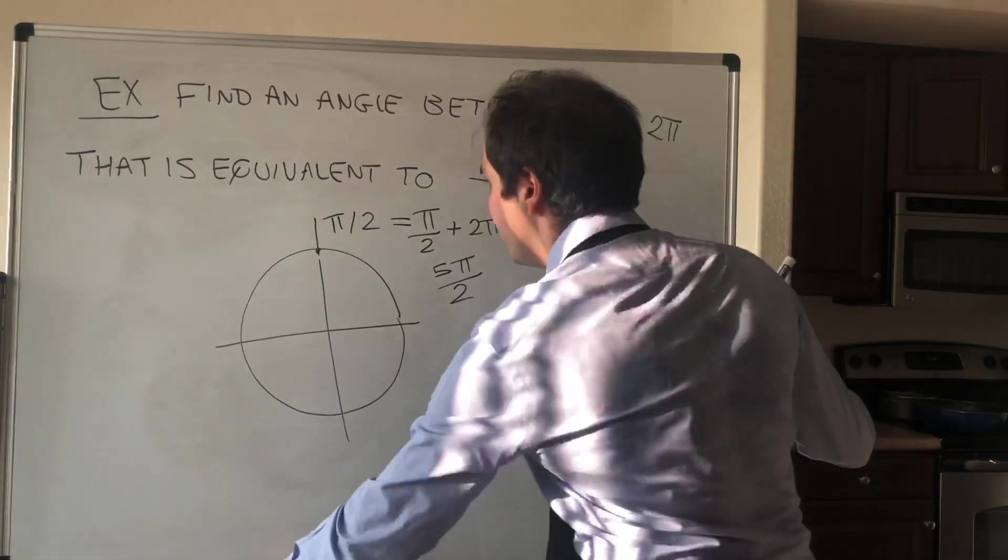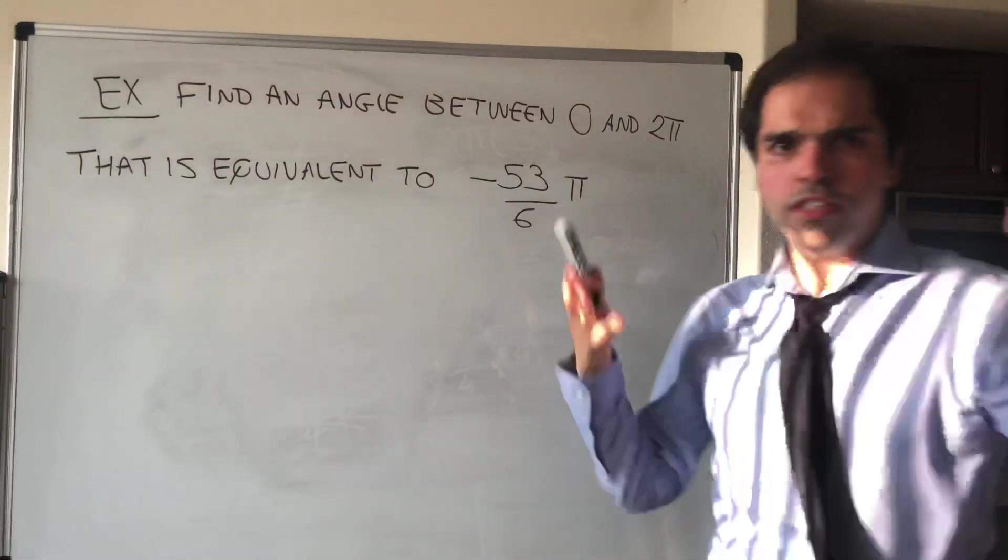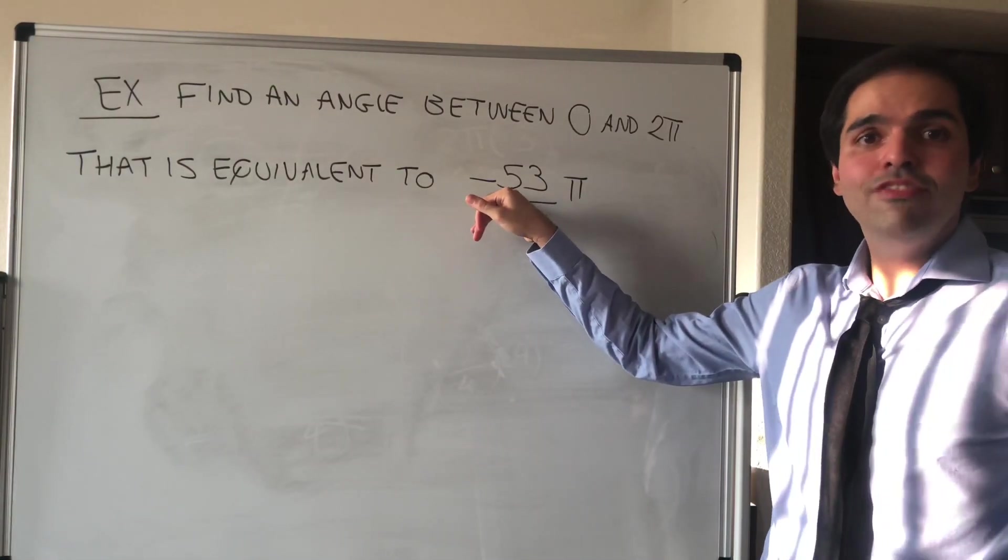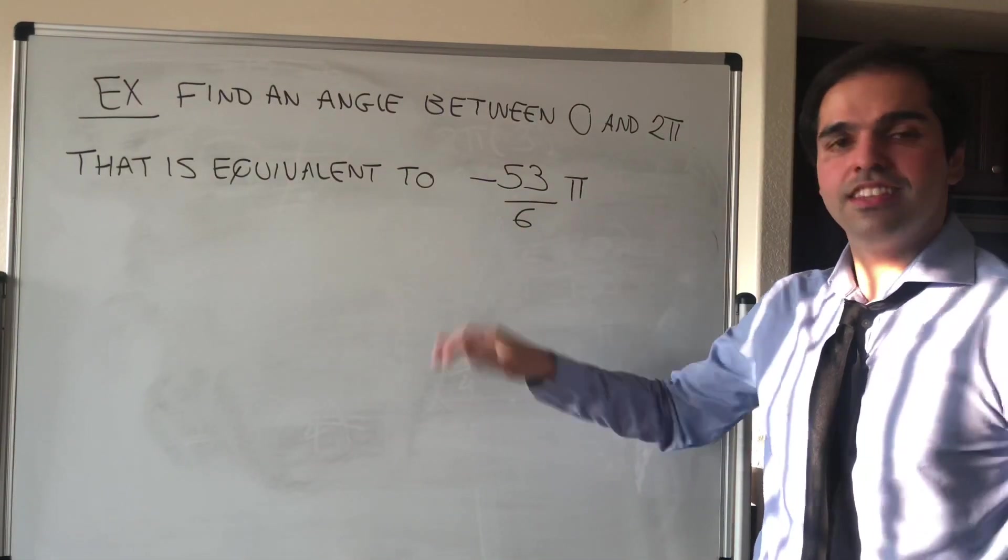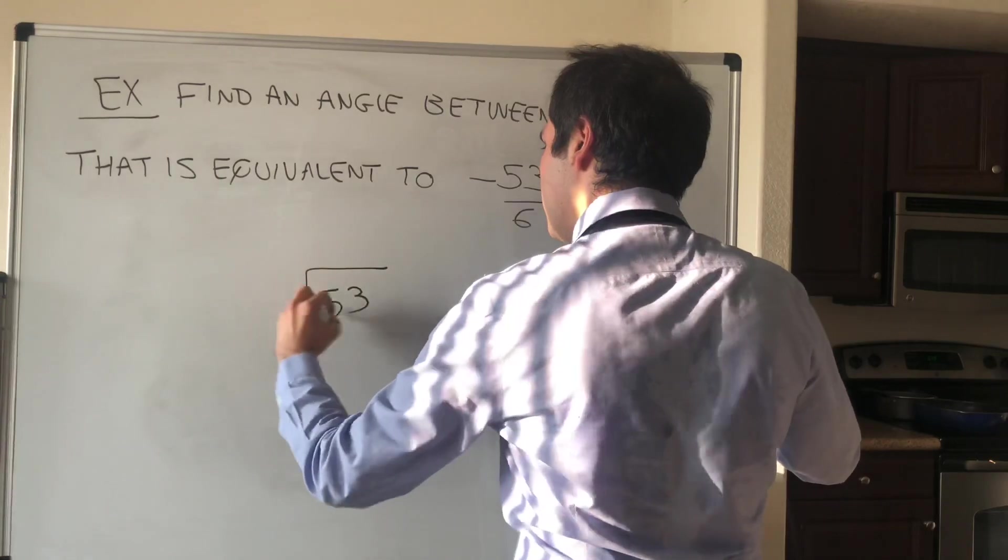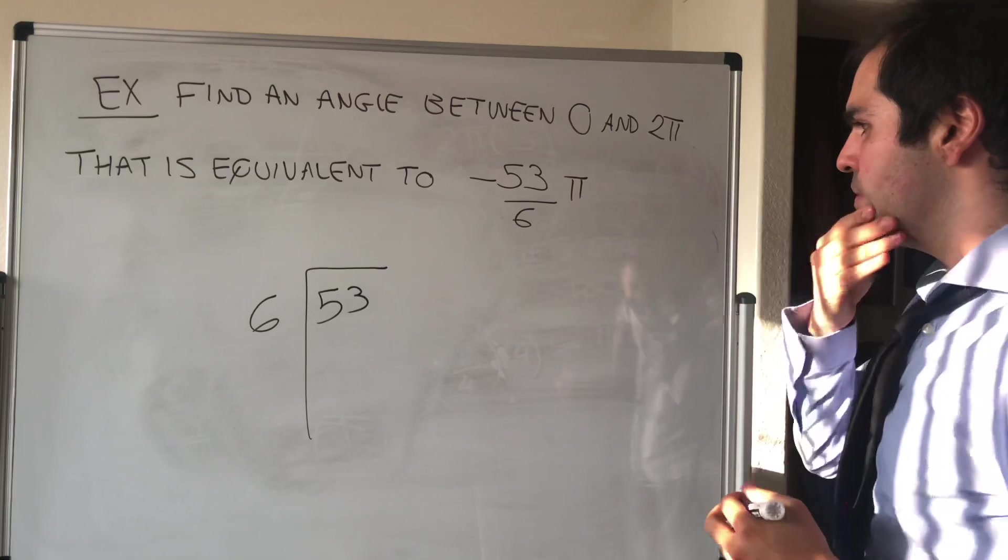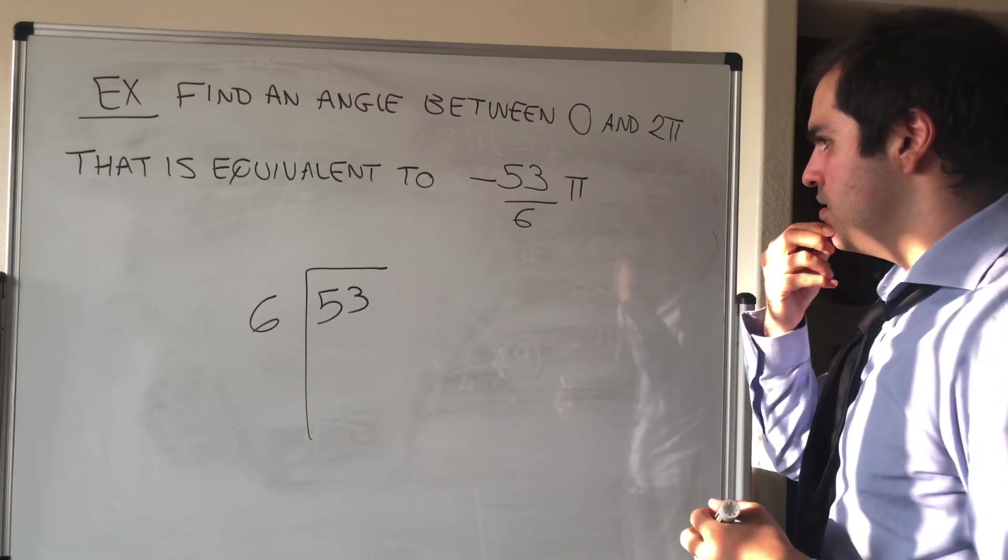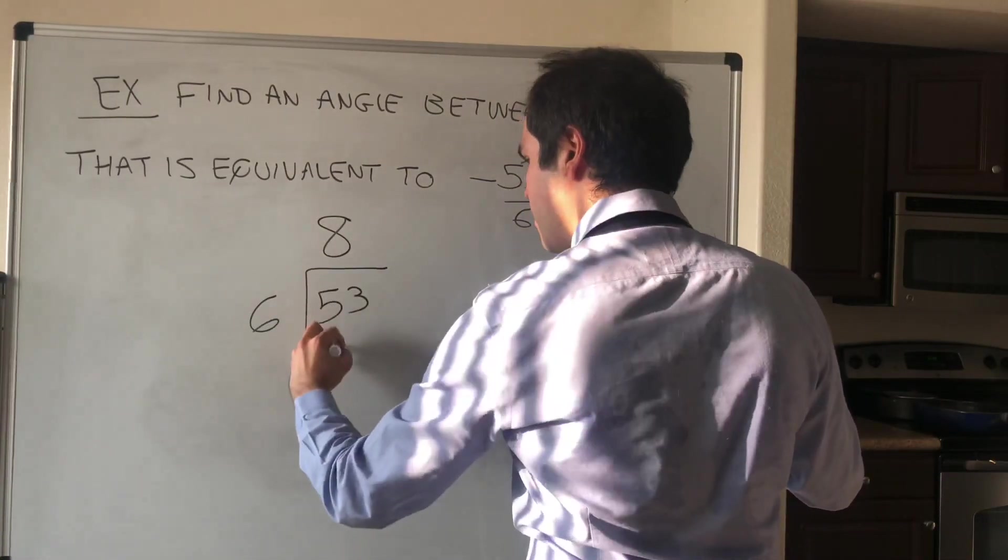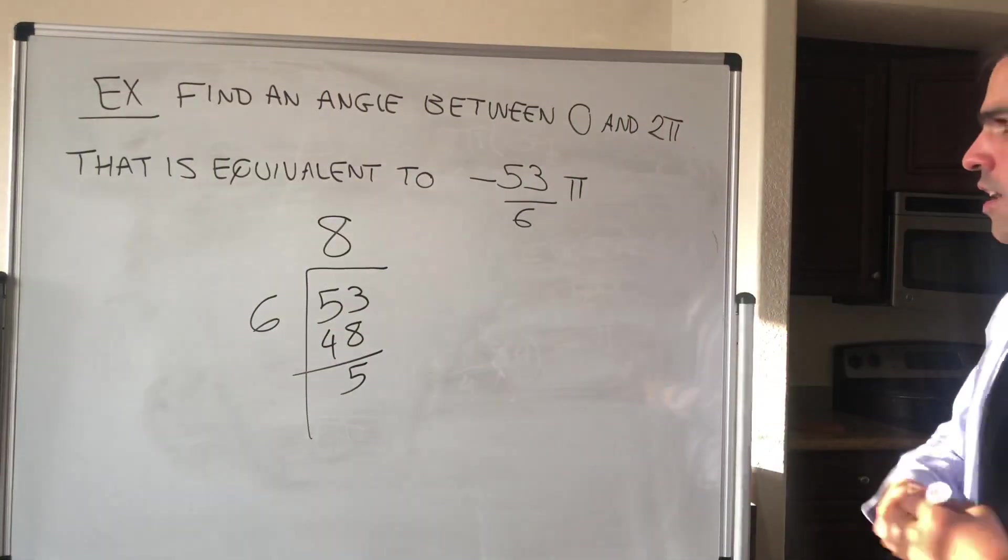Now how do we do this in this example? In my opinion, I know the notes give you this weird way of adding 2π. In my opinion, it's just easier to divide 53 by 6 and see the quotient and the remainder. So if you divide 53 by 6, I believe what you get is a quotient of 8, and then 8 times 6 is 48, and a remainder of 5.